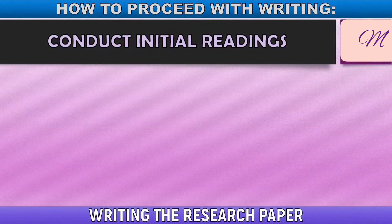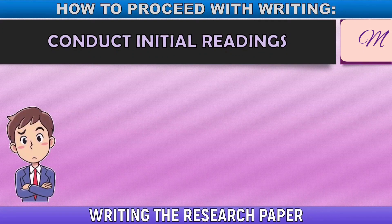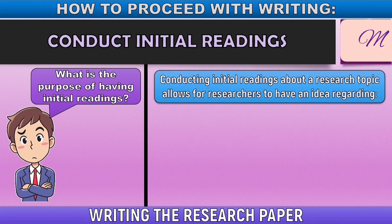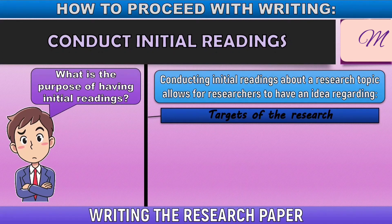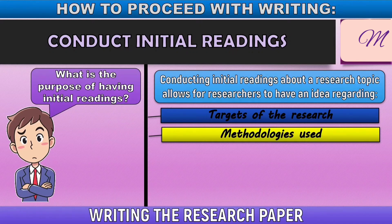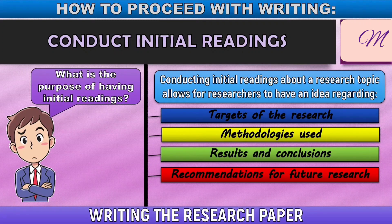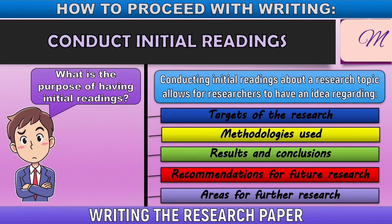After identifying the topic, we proceed with conducting initial readings. Conducting initial readings about the research topic allows researchers to have an idea regarding: first, the target of the research; second, the methodologies used by other researchers in relevant studies; third, the results and conclusions; fourth, recommendations for future research; and fifth, areas for further research. Conducting initial readings gives you an idea of how to conduct your study, what methodologies to use, what information you'll need, and how to avoid repetition of results.